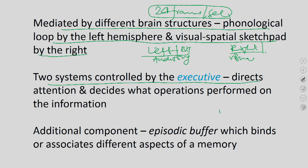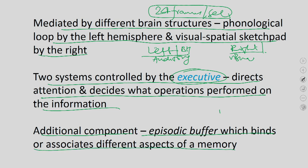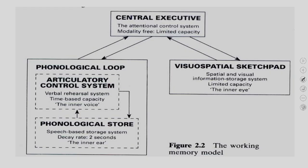Two subsystems — the phonological loop and the visuospatial sketchpad — store different kinds of information. The central executive directs attention and decides what operations are performed on the information. An additional component, the episodic buffer, has been added: it binds information and associations from different aspects of memory. This is Alan Baddeley's conceptualization of working memory.